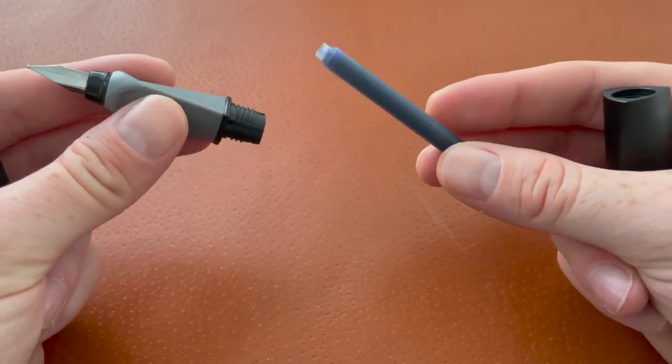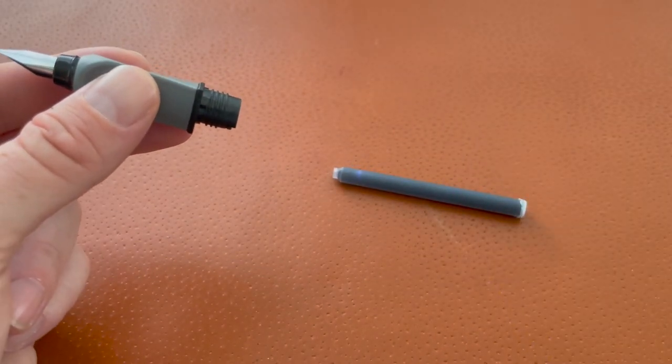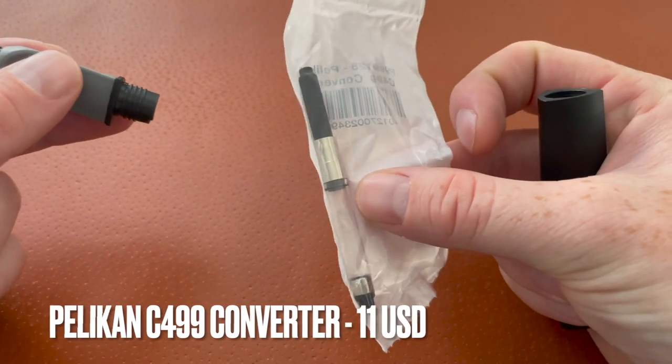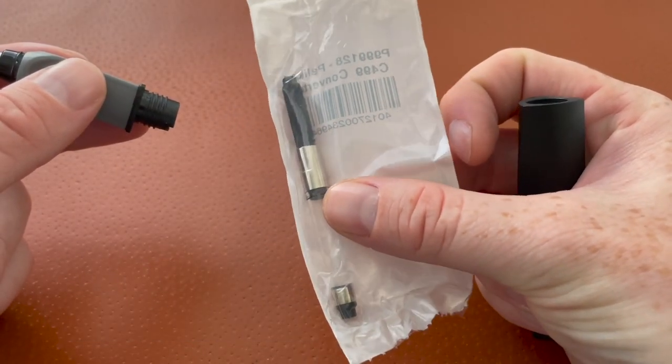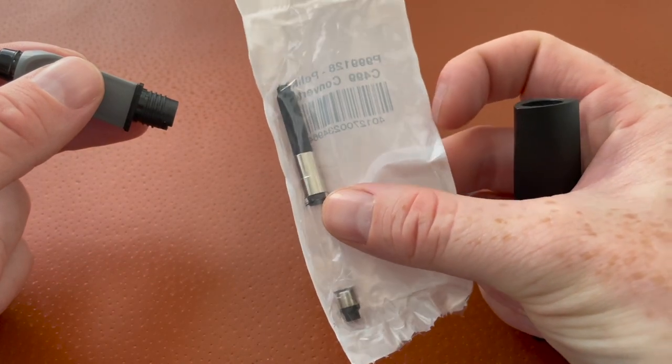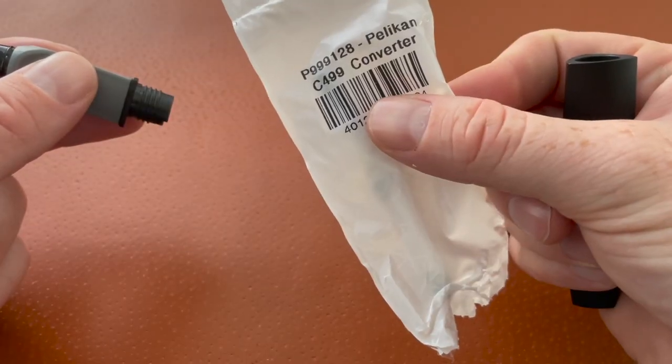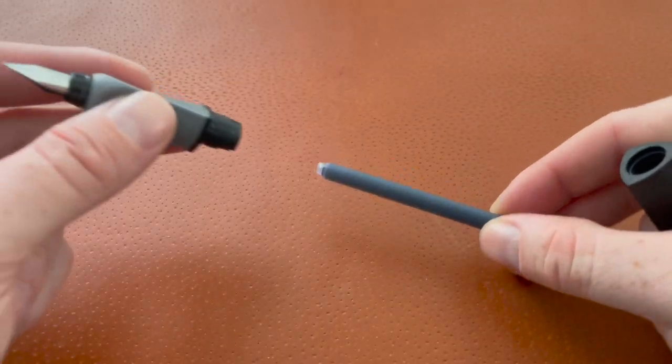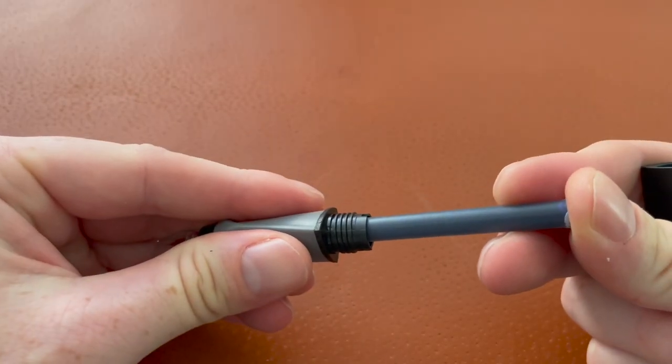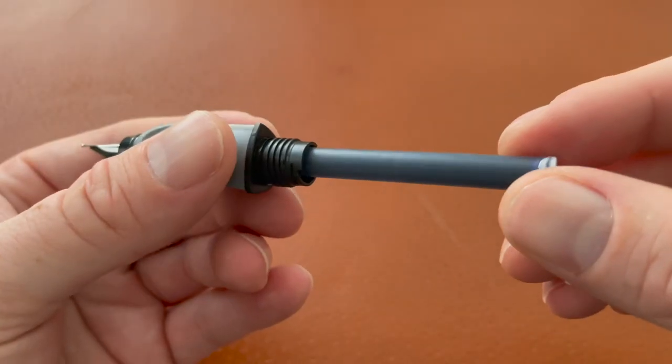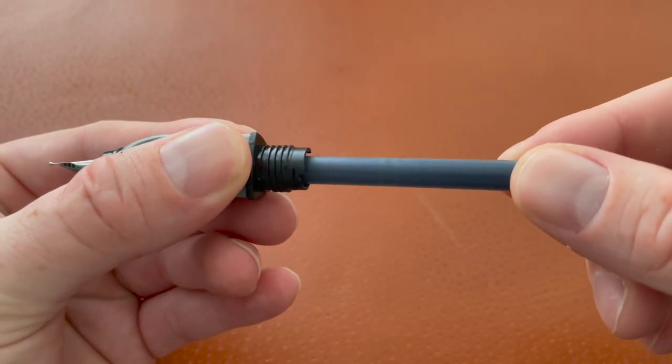As far as the filling system goes, it comes with one blue cartridge. You can buy a converter separately but it costs $11, that's almost half the price of the pen just for the converter. This is a Pelikan C499 converter but for the sake of this video I'm just going to use the cartridge. So we will just insert that in, puncture it, it's secure in there.